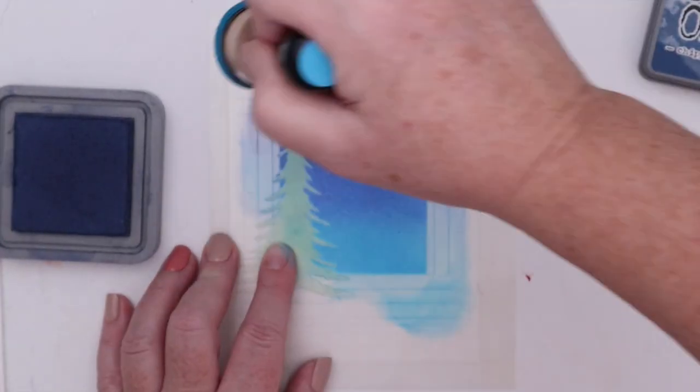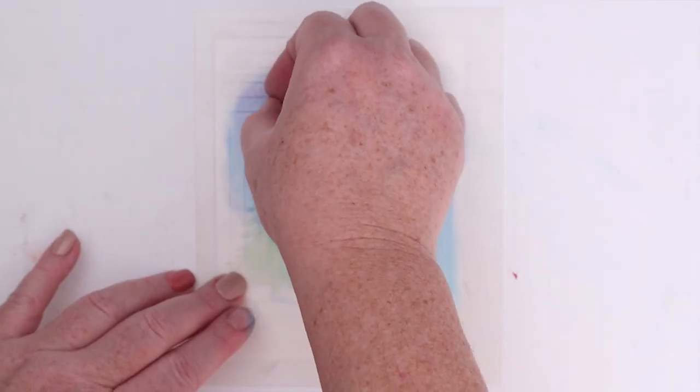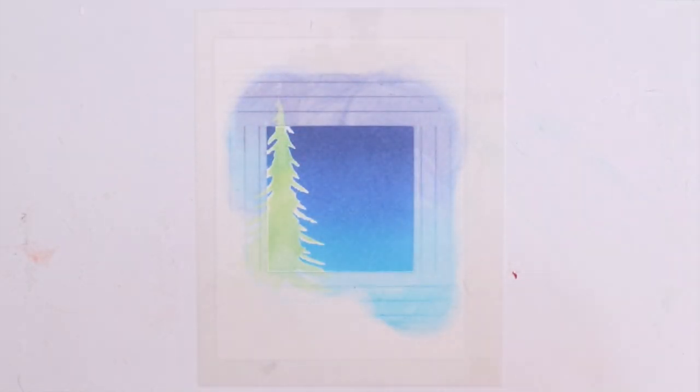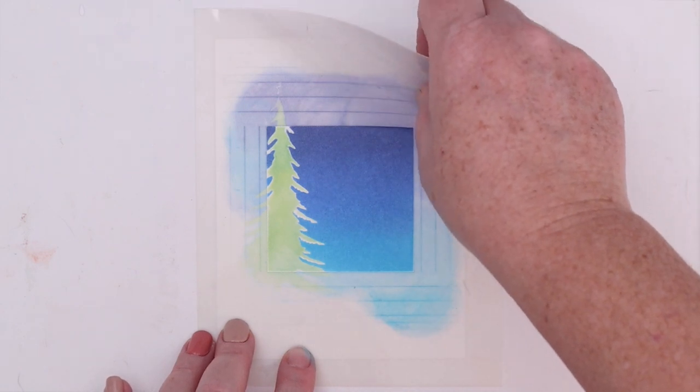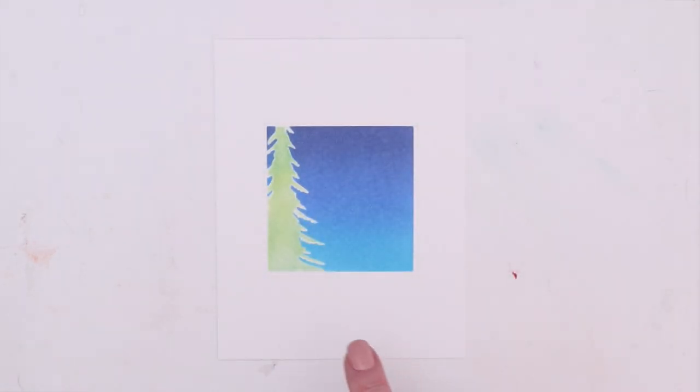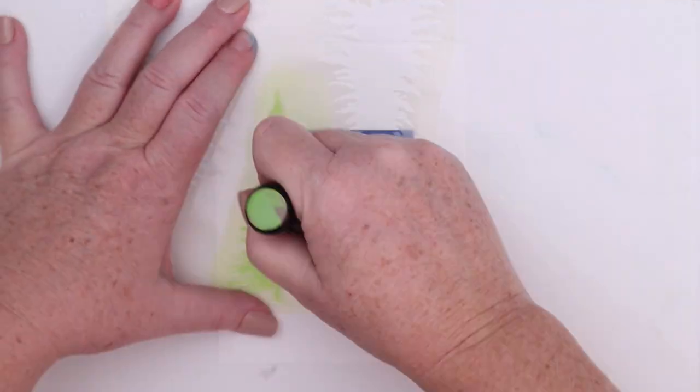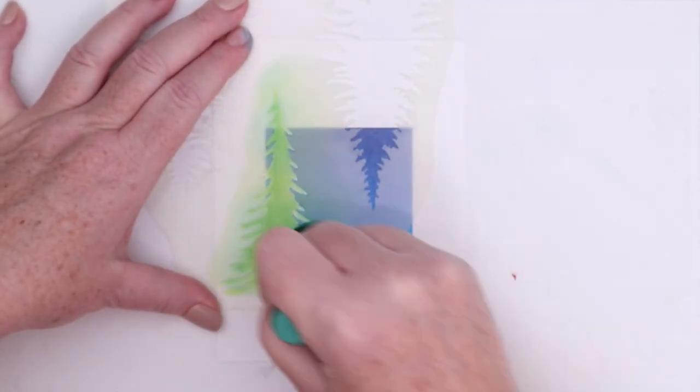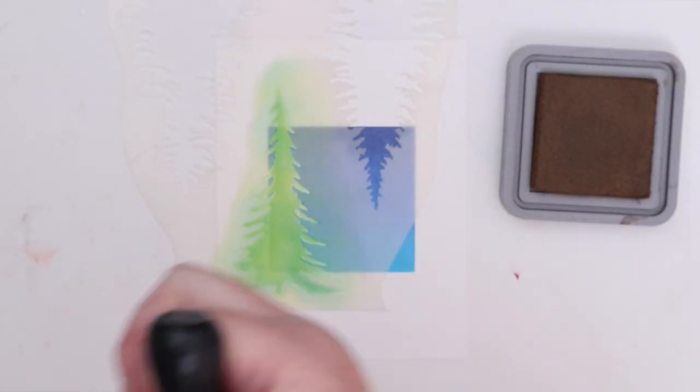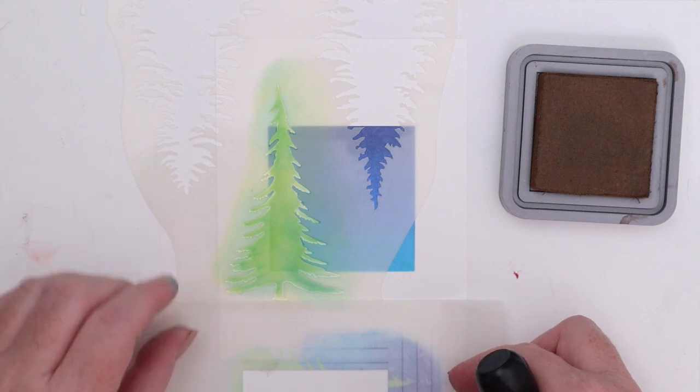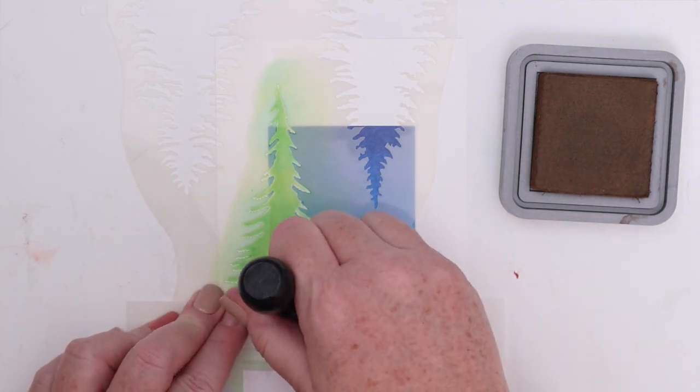Once I finish ink blending the square, I can peel off the tree mask and the square stencil. Now I replaced the Pine Tree stencil and this time I fully blend out the tree with Mowed Lawn and Pine Needles Distress Oxide inks. To color the tree stump I cover up the bottom of the card so I don't get brown everywhere and then ink blend the stump.